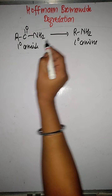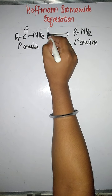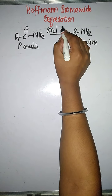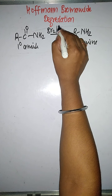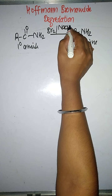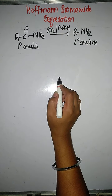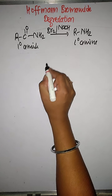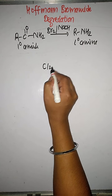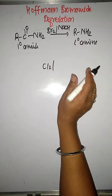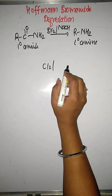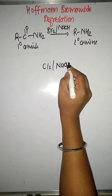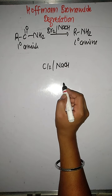In this reaction we use a basic bromine reagent — that is bromine in presence of NaOH or bromine in presence of KOH. Sometimes we can also use chlorine instead of bromine, that is chlorine in presence of NaOH or chlorine in presence of KOH.